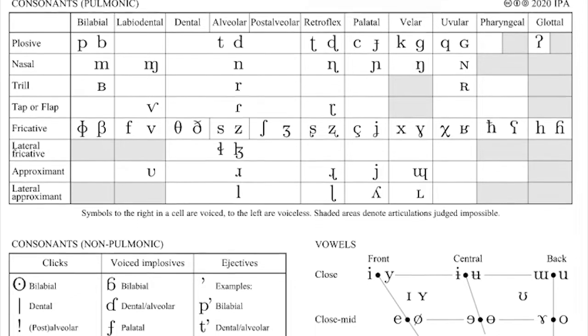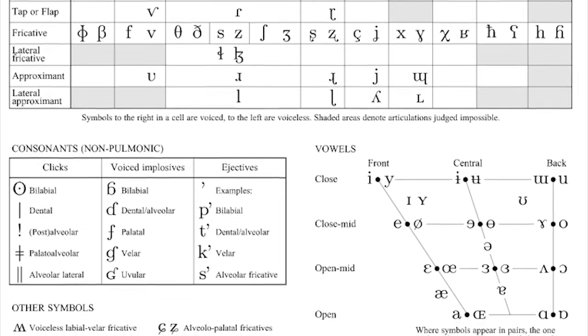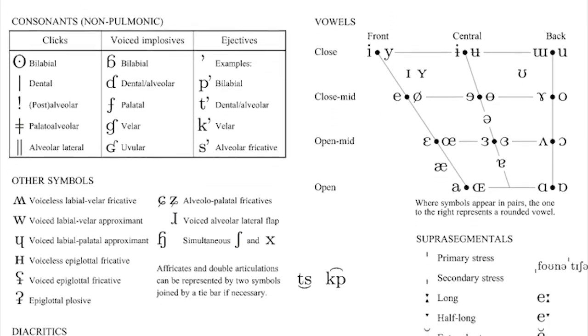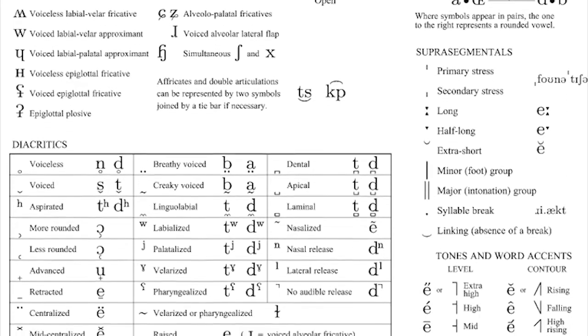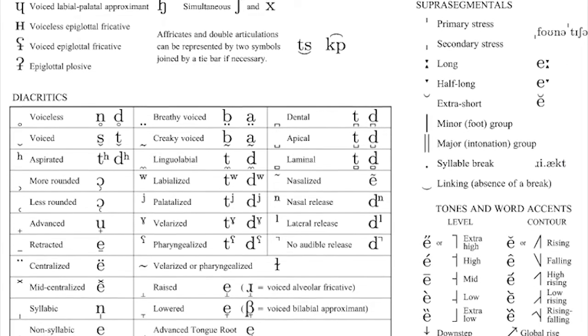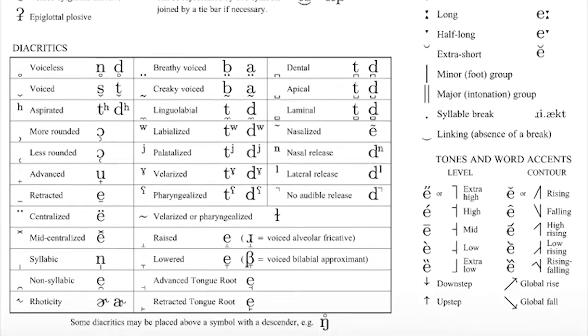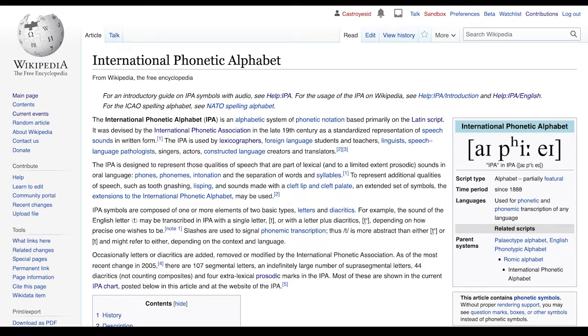Before we get started, there are three things I want to note. The first: the International Phonetic Alphabet, or the IPA, is a tool that linguists use to represent sounds. It started taking shape around the 1880s when language teachers in Paris realized that their various languages use the same letters to represent different sounds, and it would be much easier if they had an international system with defined sounds that could be used to represent any spoken language.